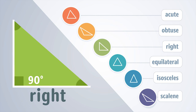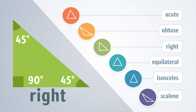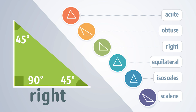The other two angles are each 45 degrees. You can use a ruler to draw a right triangle. Start by drawing two straight line segments to make an L — this is the right angle. Then connect the end points of each line segment to create a right triangle.